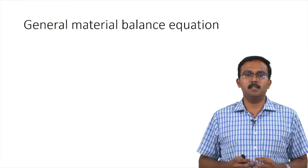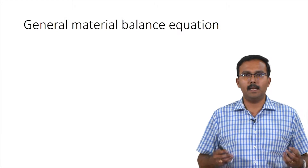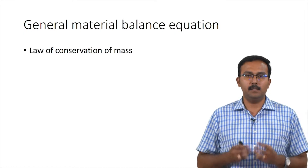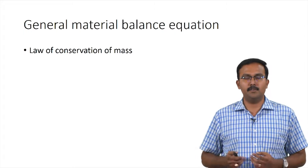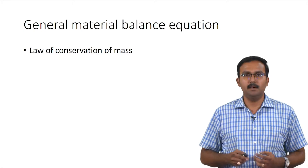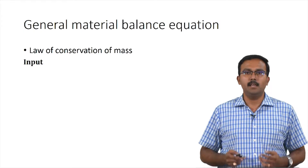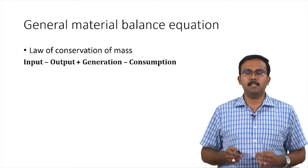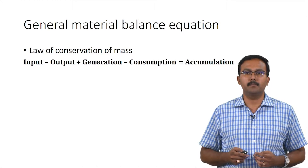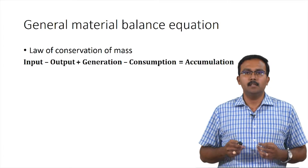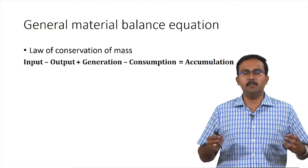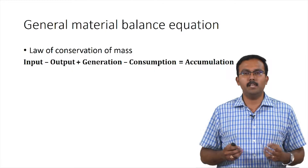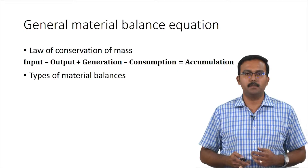Let us first start with what is the general material balance equation. Material balance equations are based on the law of conservation of mass, so the equation itself is: input minus output plus generation minus consumption equals accumulation. Using this general material balance equation we have performed calculations for various types of systems.